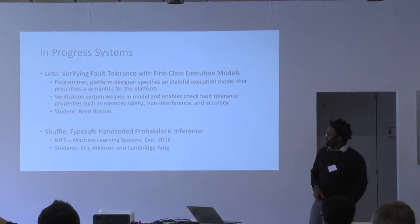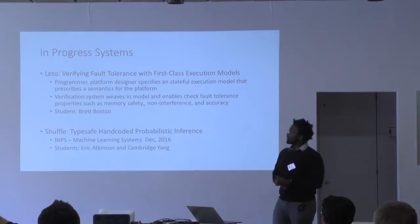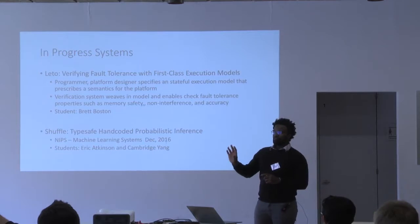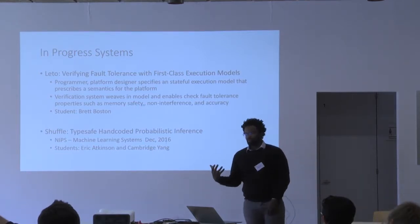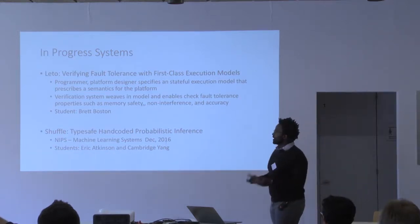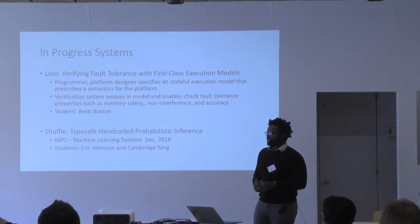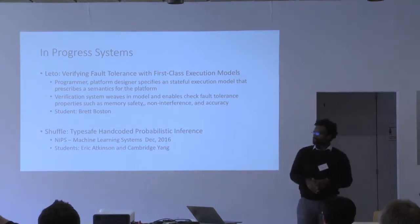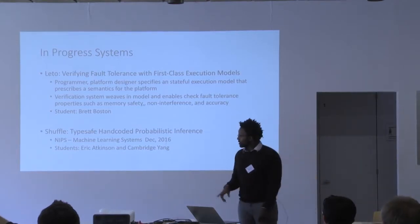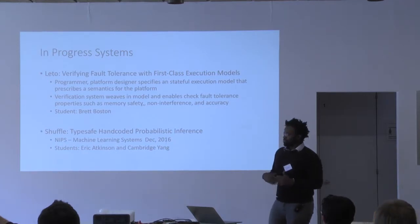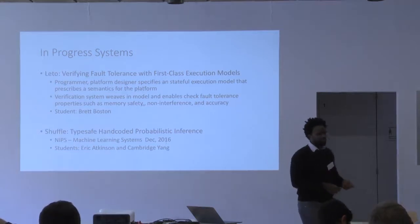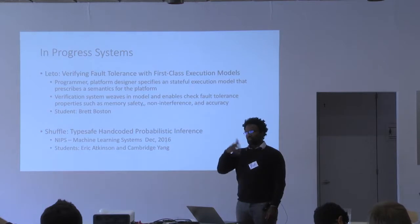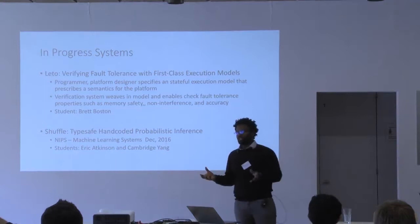What I'm going to talk about today is some systems from my group. One is Leto, where we're verifying application-specific fault tolerance properties by allowing platform designers to write first-class execution models that can describe a variety of errors in your execution, and proving standard safety properties as well as relational properties like accuracy and non-interference. What I'll mostly talk about today is a system called Shuffle — type-safe hand-coded probabilistic inference procedures. These results came out initially in a paper last year. Shuffle is very much a work in progress — we're trying to come up with a way to allow developers to write inference procedures by hand with some guarantee that this probabilistic inference procedure will compute the result they expect.